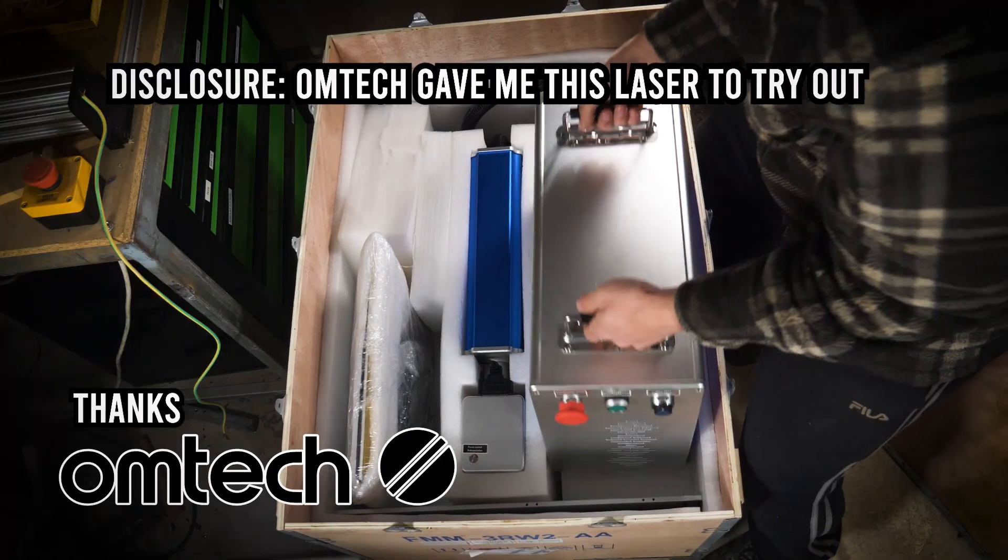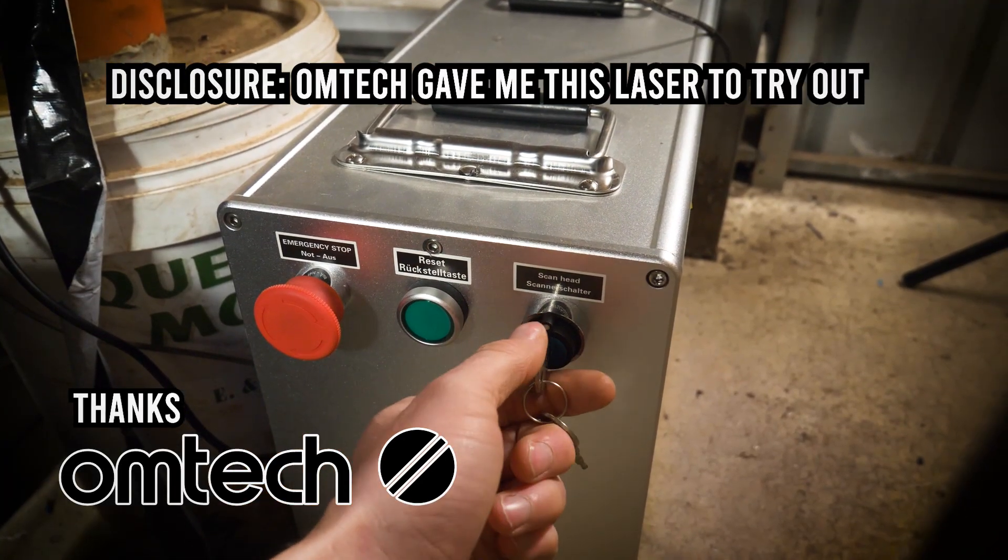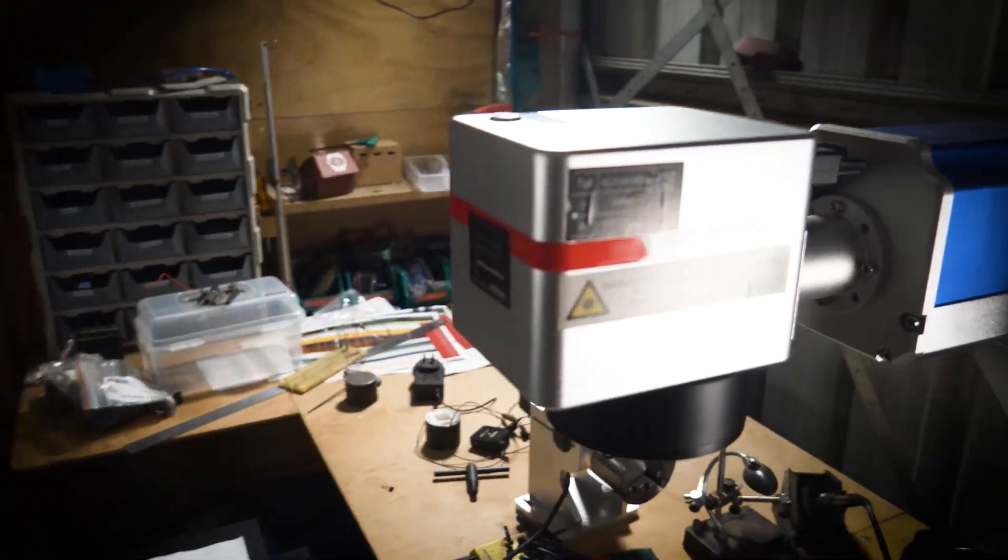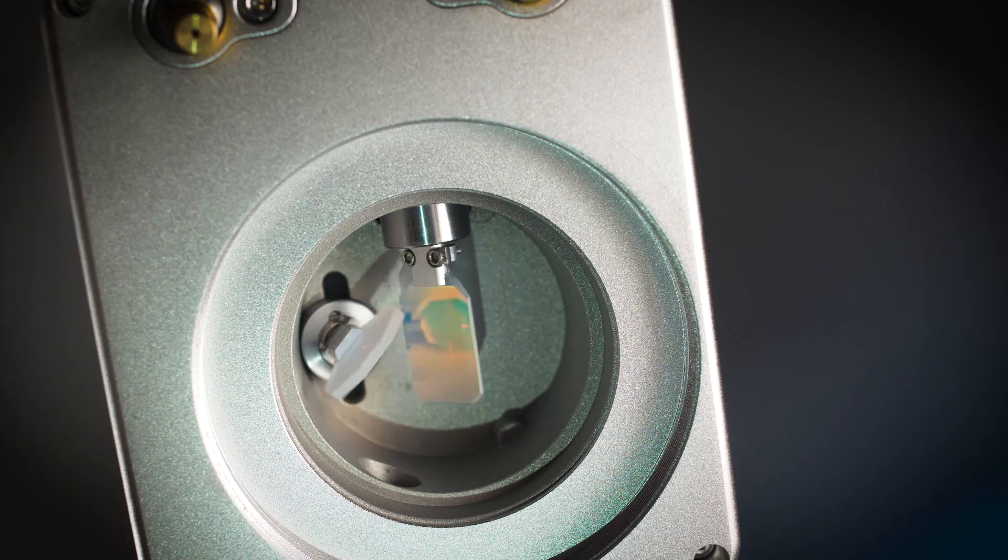Full disclosure, Omtek gave me this laser to try out. This is a fiber laser. It consists of the laser source in this box which beams a laser through optical fiber to the laser head. It uses mirrors to zip the laser around quickly to engrave parts.